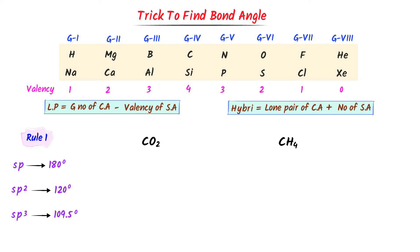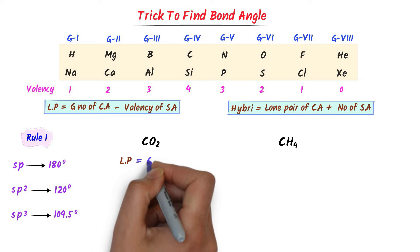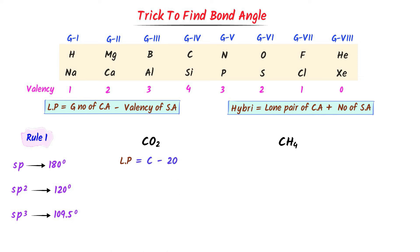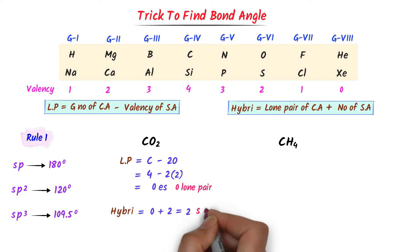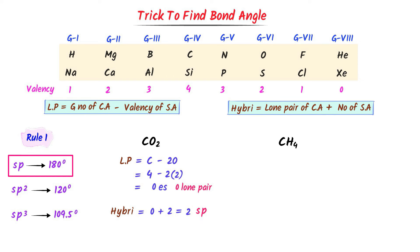Secondly, consider these two compounds. For CO2, lone pair equals group number of carbon (4) minus 2 into 2 (valency of oxygen). I get 0 electrons, so the lone pair is 0. Hybridization: 0 plus 2 surrounding atoms equals 2, which means SP hybridization. So the bond angle will be 180 degrees.